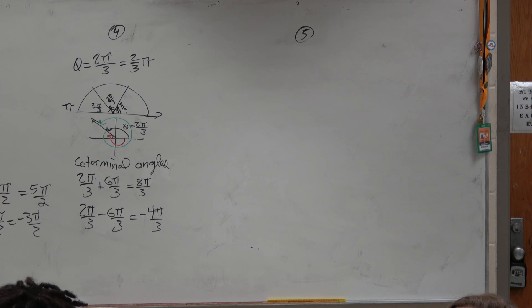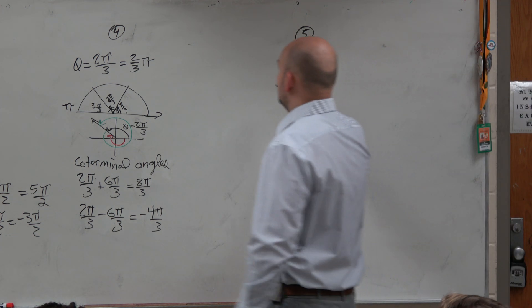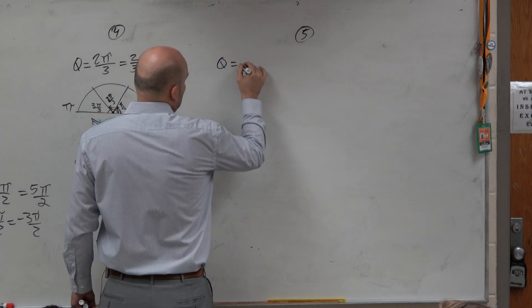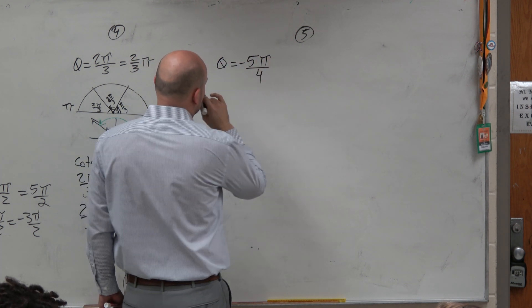That would be a much better decision to do. So the next example here is, let's do theta equals negative 5 pi over 4, all right?